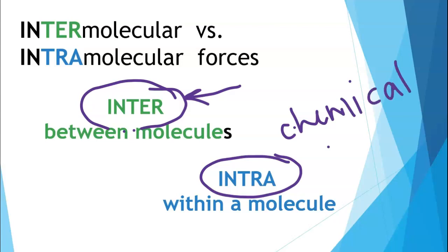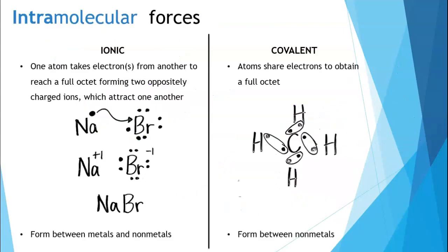There are two main types of intramolecular forces: ionic bonds and covalent bonds. The difference between these two bond types is what is happening with the electrons. The whole point of chemistry is to increase stability, and what makes an atom stable is having a full octet — meaning eight electrons. The difference in these two types of bonding is how the atoms go about getting a full octet.